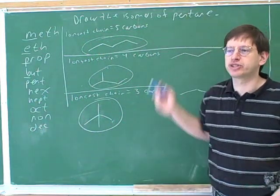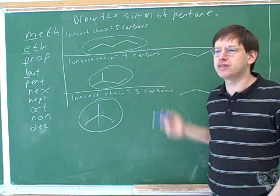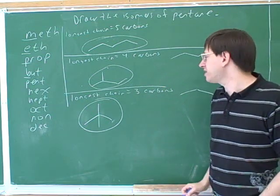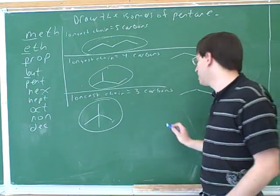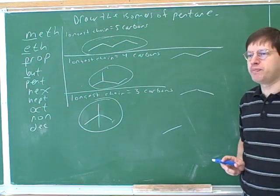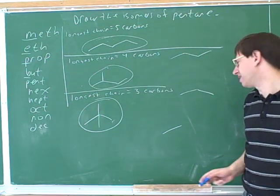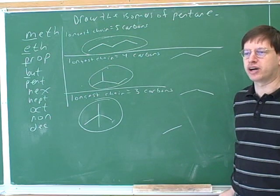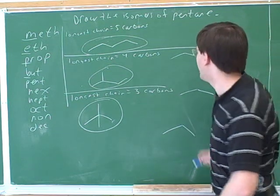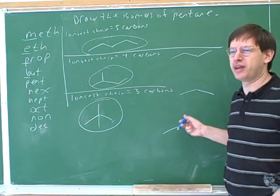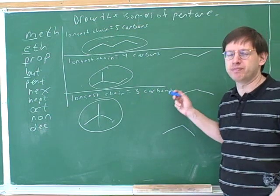So that's the method for doing these types of problems. You start by drawing the longest possible chain, then you do the next longest, then you do the next longest. I suppose theoretically now we should start by trying to draw a longest chain of only two carbons. But I think it's pretty clear that there's no way to put in the remaining three carbons without getting the longest chain to be more than just two carbons. Once I put in even one more carbon, now the longest chain is three carbons. So there's no way that you could have the longest chain only being two carbons.